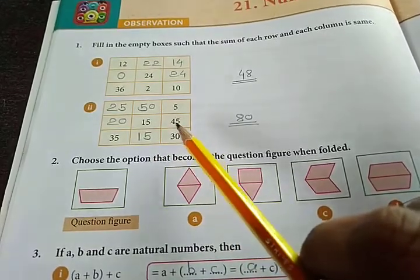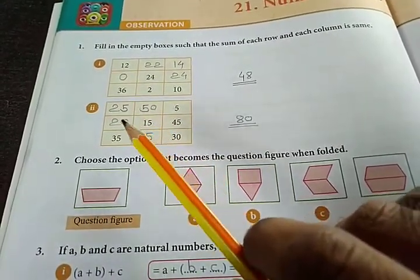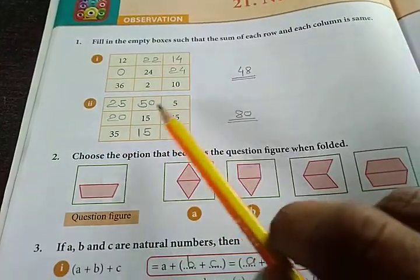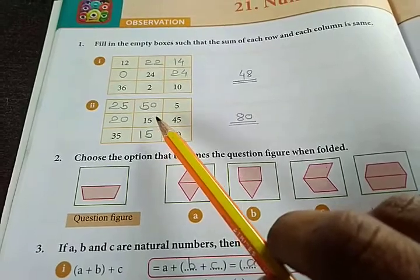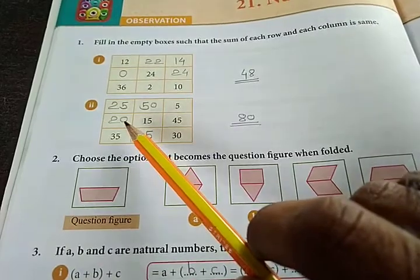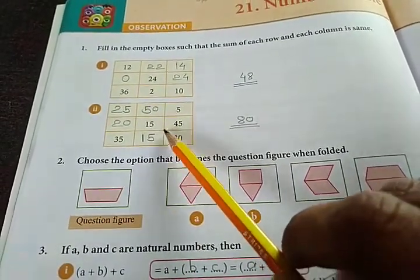Then here is given 35 and 30. So their addition was 65, so we added 15 here, then 80. Then 15 plus 45 equals 60 plus 20 equals 80. And here we get 20, then 25 plus 20 plus 35 equals 80. 50 plus 15 equals 65 plus 15 equals 80. So answers will be 25 and 20 and 50 and 15 in this downside column.